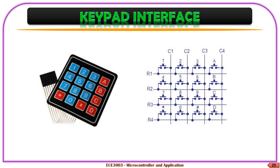A 4x4 keypad, as you can see on the screen, consists of four rows and four columns and the replica of the electronic circuitry involved there. Basically, a keypad consists of push button switches connected in rows and columns, and we have to read through the rows and columns by scanning through the keypad to identify which key has been pressed.